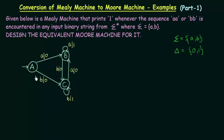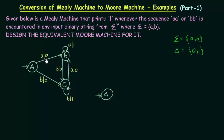Now let's design the equivalent Moore machine. Since this is a Mealy machine, the outputs are associated to the transitions. We have to associate all these outputs from the transitions to the states in order to convert it to a Moore machine. We start with the starting state, which is state A. On getting input small a, A goes to state B, and the output associated is 0.